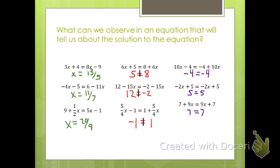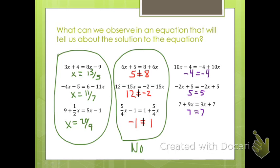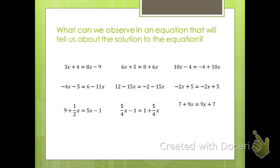If you have solved these, you should have come up with something similar to this. All of these equations here had a unique solution — a particular solution that you could find. All of these in the middle came up with a contradiction, so there's nothing that will make those equations true — these were no solution. And these were the ones that came up with something that's always true, so no matter what I put in for x, those will be true — these had infinitely many solutions.